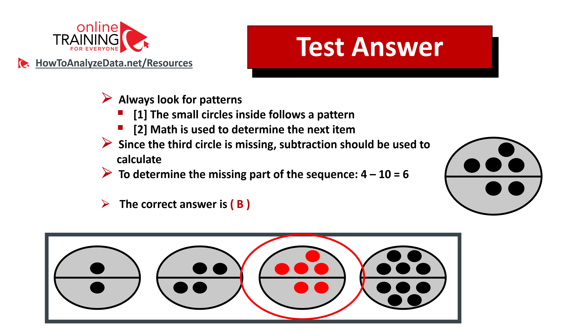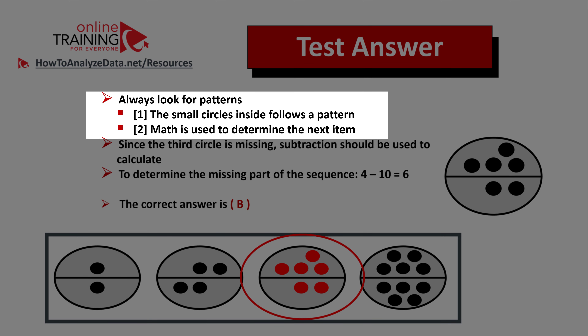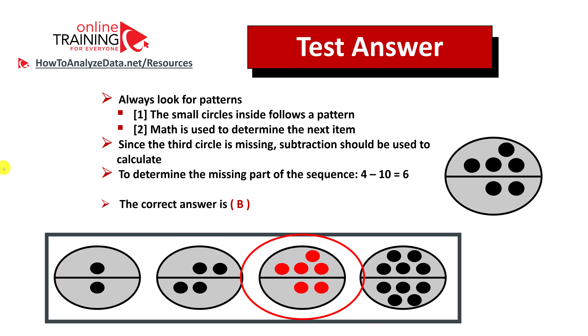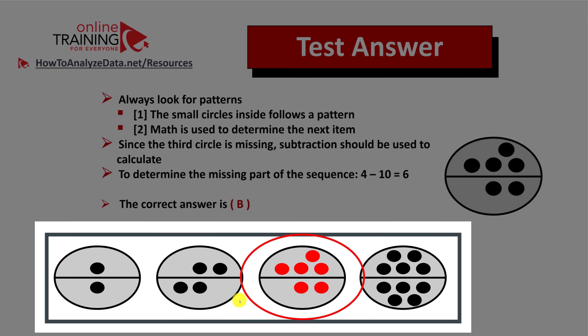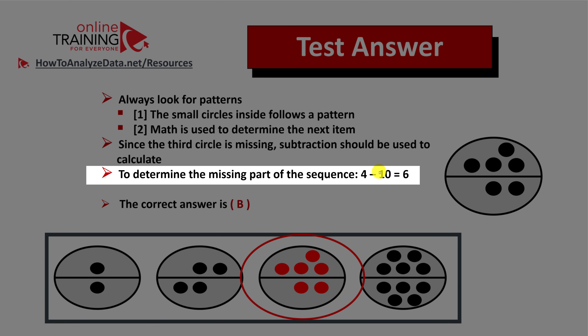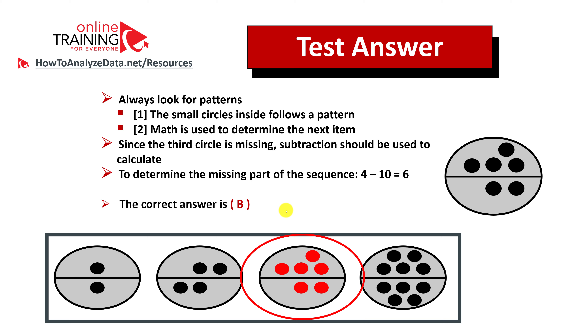Always look for patterns. There are multiple patterns here: first, there's always a small circle inside the larger oval. Second, math is used to determine the next item. Item two has four small circles and item four has ten small circles. Subtracting: 10 minus 4 equals 6. So the correct answer is choice b — the oval with six small circles.